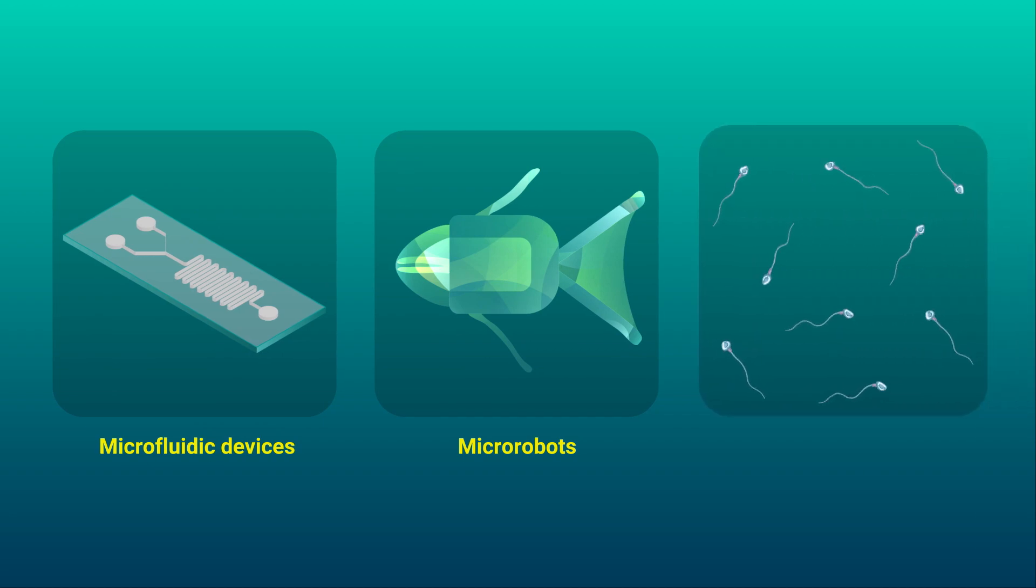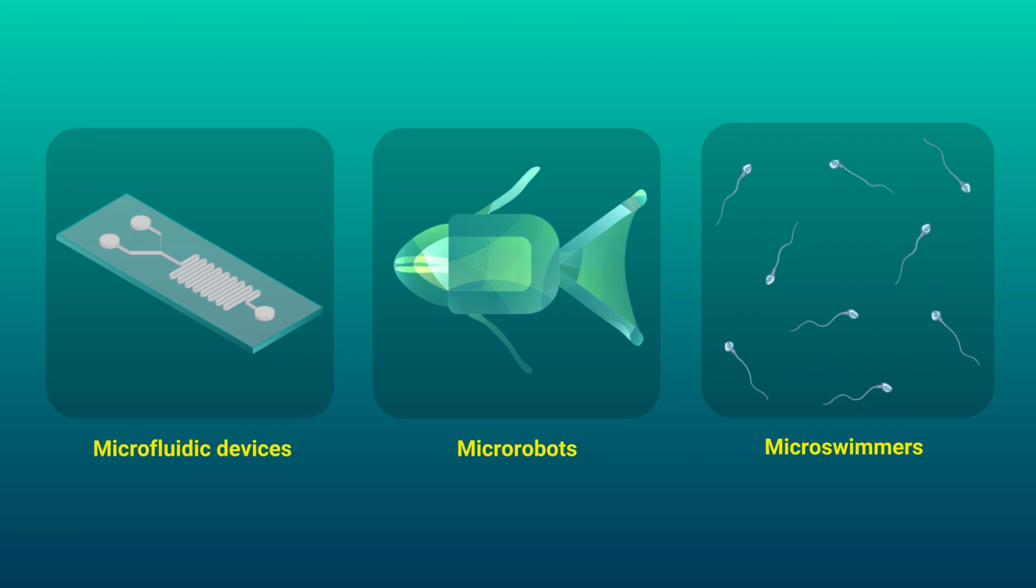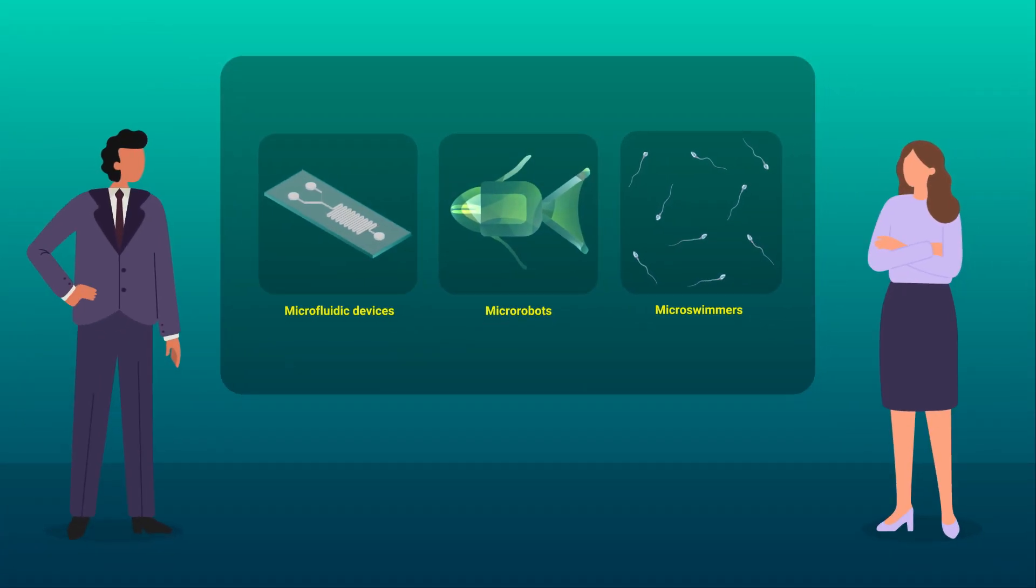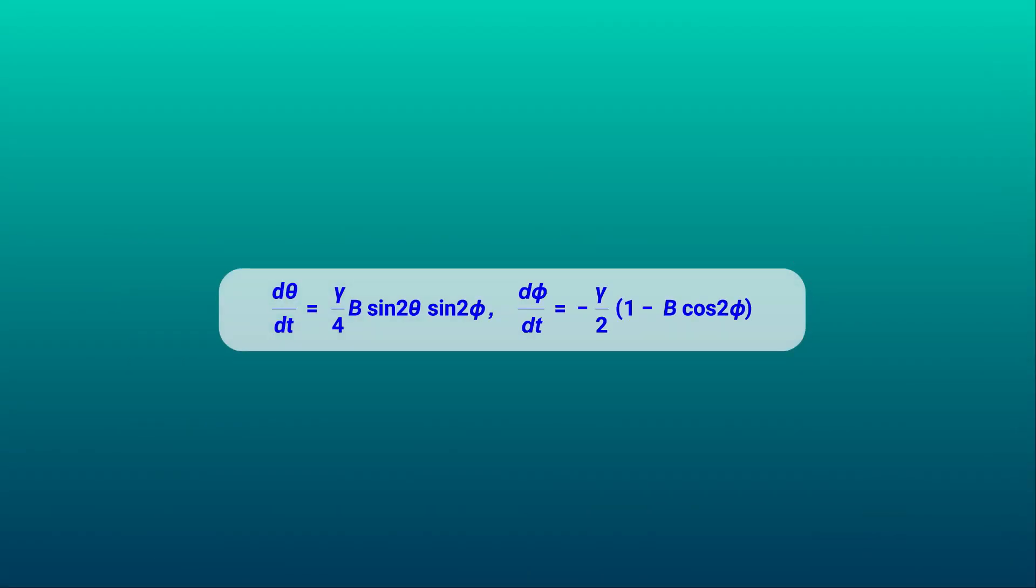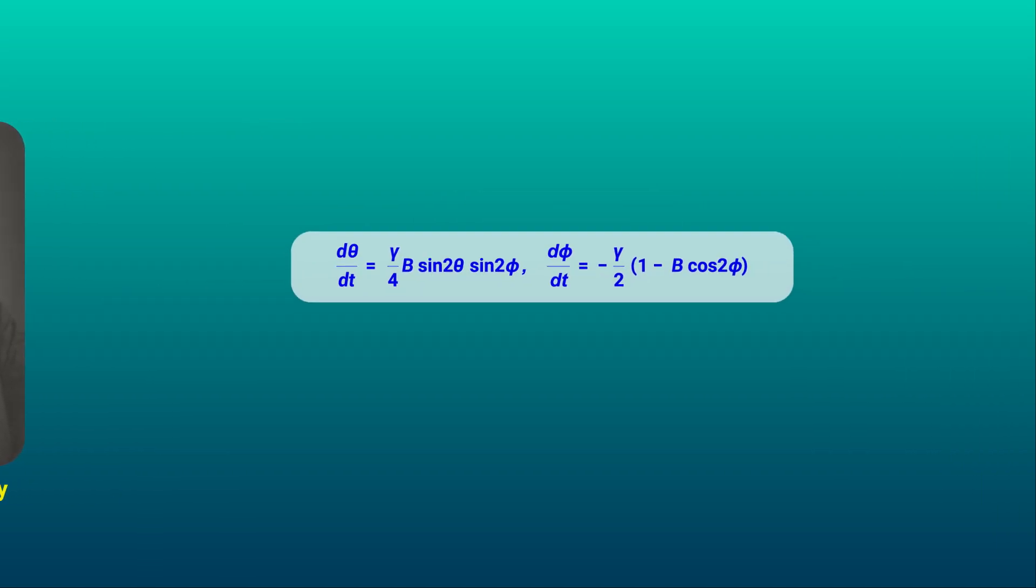...the ubiquitous presence of self-propelled biological micro swimmers such as bacteria, algae, and planktons, calls for further understanding of micro swimmer dynamics in a flow current. A useful theoretical foundation on this front is provided by Jeffrey's equations.